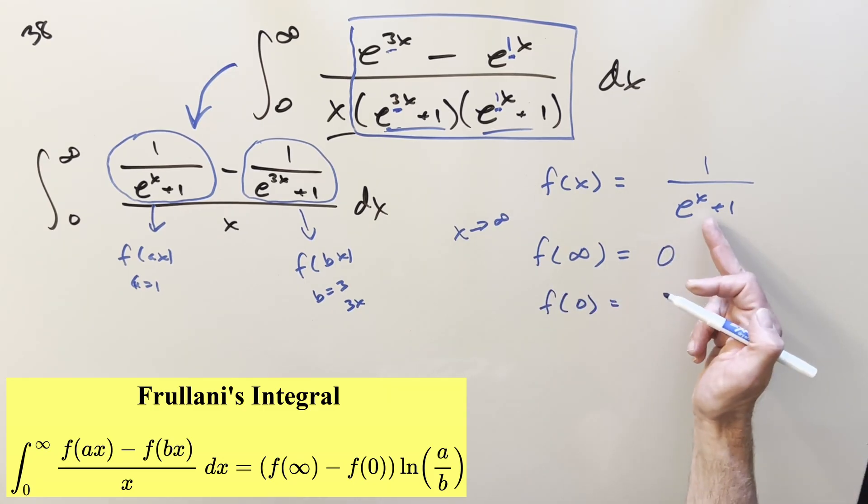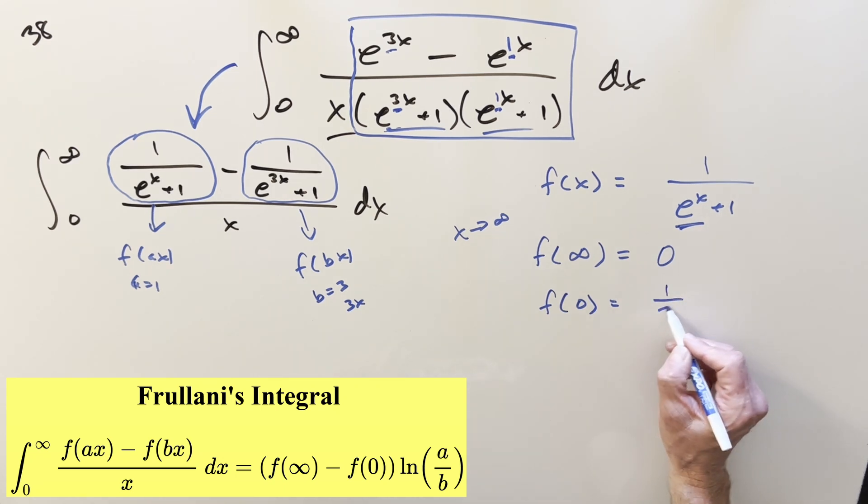Then for f at zero, you plug in zero. This piece just becomes a one. You get one over two. So the f at zero part is one half.